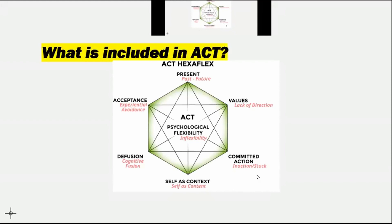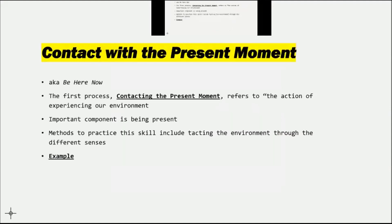If somebody is unable to engage in committed action — doing things that are really important to them — then they may be stuck or there's some inaction. With self-as-context, it's really being able to identify yourself in relation to what's happening around you, but if the person is unable to do that, they're really putting themselves in that content and giving themselves the perspective that they're very involved in what's taking place. With diffusion, if somebody isn't able to diffuse, they are fusing with private events, making it more challenging to operate. Finally, if somebody is unable to accept challenges, they're trying to push away or avoid those more challenging situations.